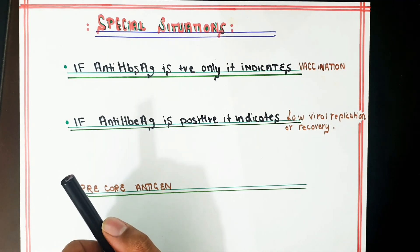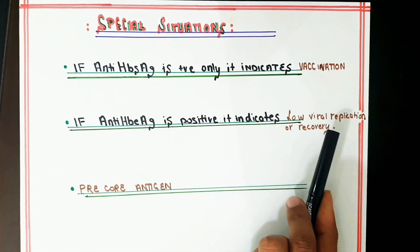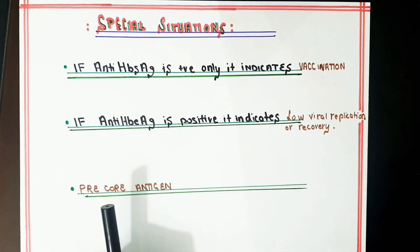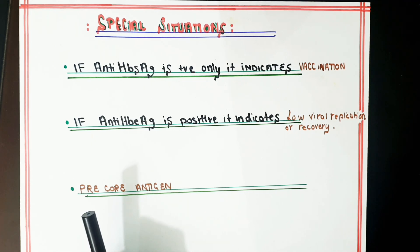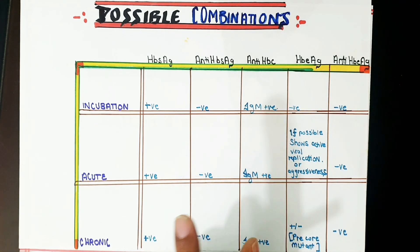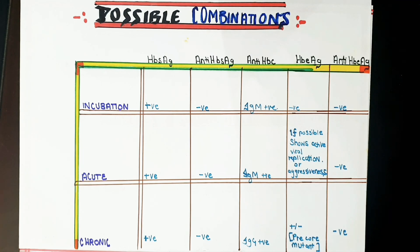Another special point: if anti-HBe is positive, it indicates low viral replication or recovery. The precore mutant is an important exception — in this chronic state, the virus is replicating actively and is aggressive, but the HBe antigen is negative. This is the defining feature of the precore mutant.